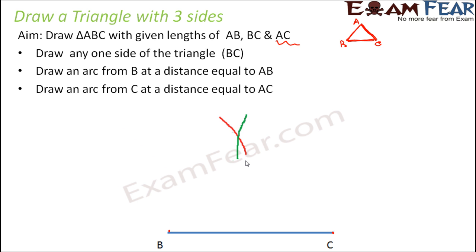Now what do you see? You see that these two arcs intersect at a point. This point is nothing but point A. So this is going to be your point A. You join this point A to both B and C and that is how you get this triangle ABC.